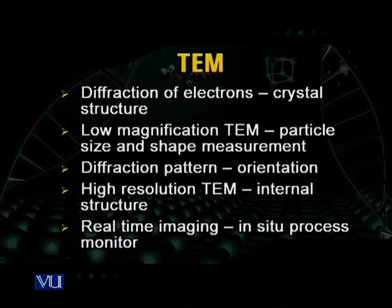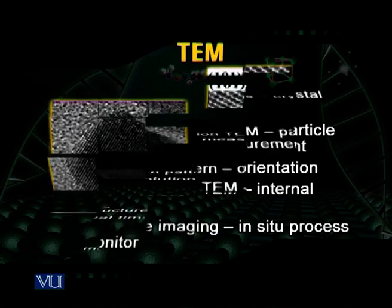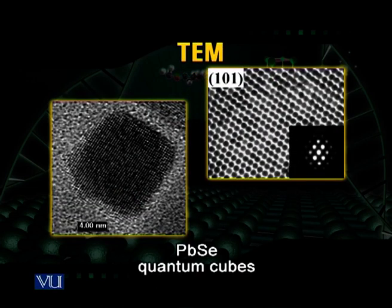Now let's talk about characterization. One way to characterize materials is with a transmission electron microscope — any materials laboratory needs such a device because you're able to see things in real space, do diffraction, or focus a very small beam on the atomic structure of the particle. It's a wonderfully diverse technique.